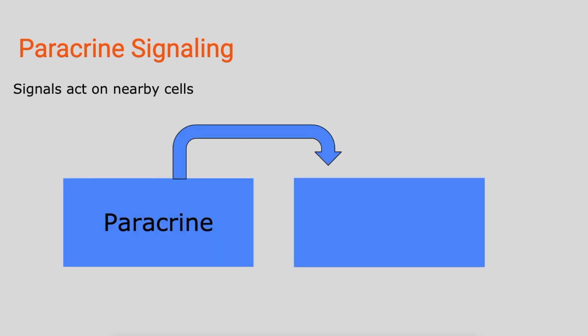In paracrine signaling, the signal is going to act on nearby cells. So this cell right here is going to secrete a signal, and it's going to act on this nearby cell.